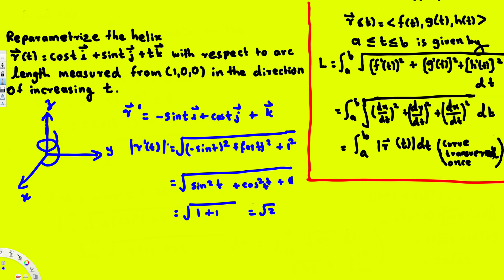This gives us the square root of 2. Now we have to integrate this to find the arc length s. So s equals the integral from 0 to t of √2 du, and integrating that gives us √2·t.